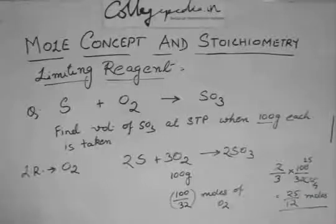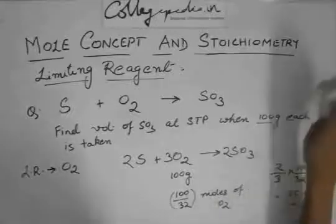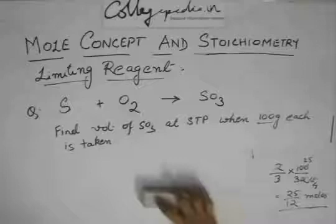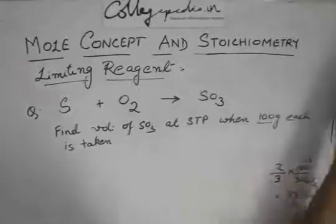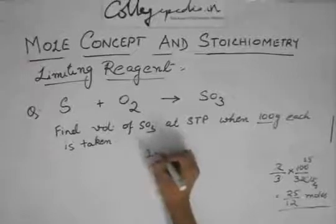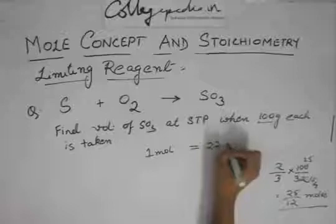The number of moles of SO3 formed, we have found. Now we have to find the volume of SO3 at STP. As usual, use that same old thing: 1 mole at STP is equal to 22.4 liters.